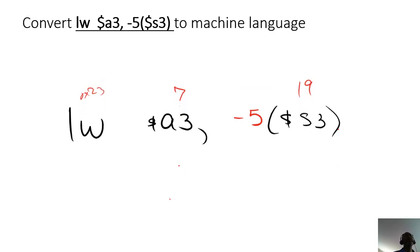So it's a 23, it's a type I instruction, and then also, the second thing would be is to make note of the register number. So you see you have register A3 and S3.